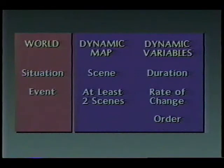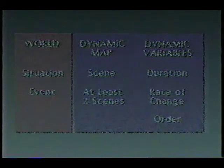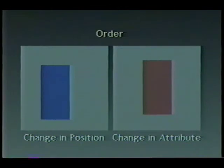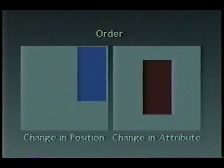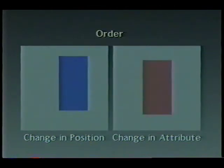A third dynamic variable is the order in which scenes are presented. The logic of chronological sequencing of scenes associated with a time-series dataset is obvious. There are instances when ordering a series by a metric other than chronology is logical and potentially fruitful in geographic analysis.